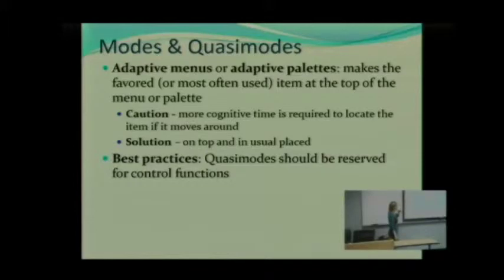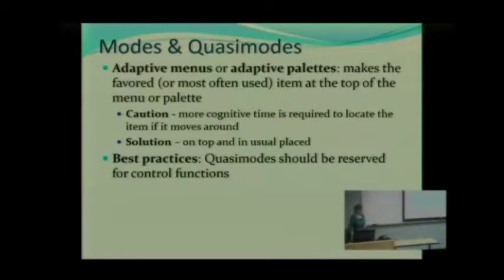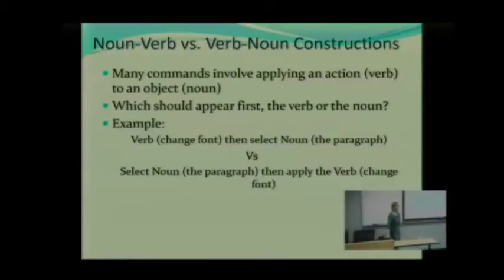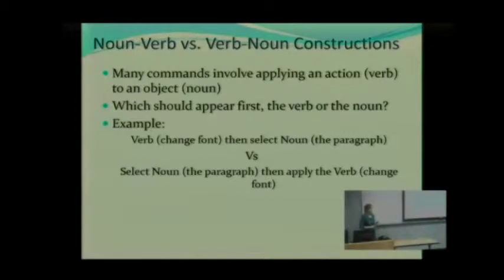As with other modes, there are best practices with quasi-modes. They should be reserved for control functions, and even then you want to limit the number of control functions. Now here's a really interesting aspect of commands that people tend not to think about: when we look at a lot of commands, they involve applying a verb to a noun. So when we are trying to use a control function, what should appear first — the verb or the noun?